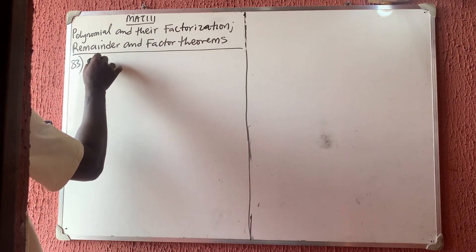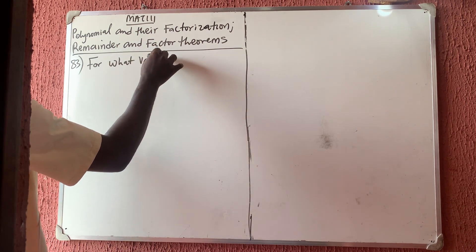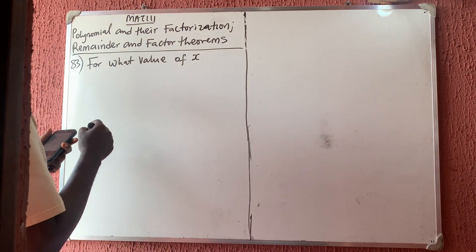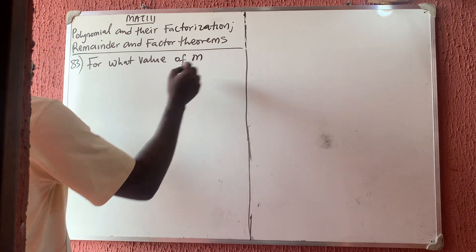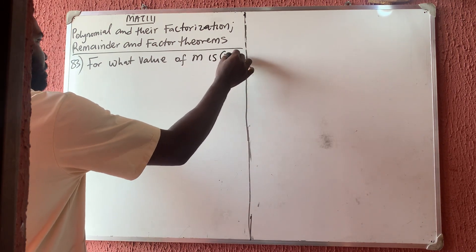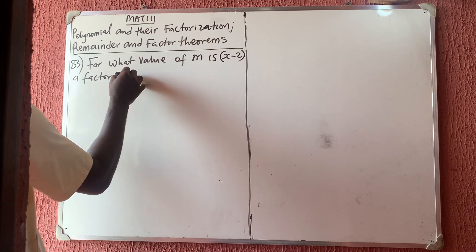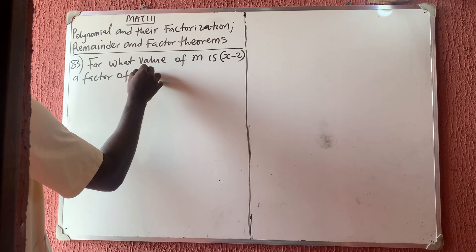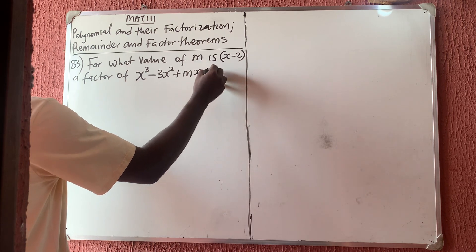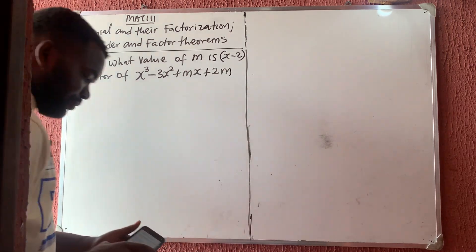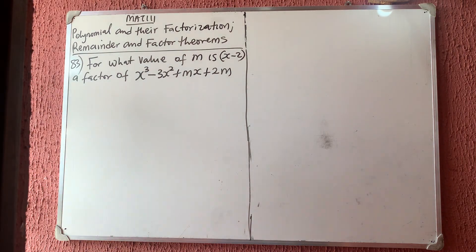Question number 83: For what value of m is x minus 2 a factor of x cubed minus 3x squared plus mx plus 2m? For a polynomial to be a factor of another polynomial, when you divide, the remainder is going to be zero.